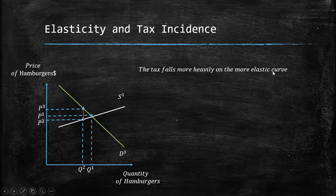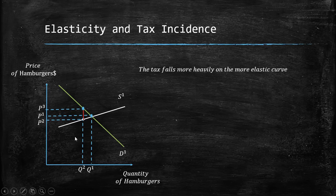The more inelastic you are, the more you are going to be affected by the tax. If you are more elastic, like the supply curve in this example, you will be less affected. As shown in the graph, the demand is more inelastic here, so it is affected more. If you are elastic, you are not going to be so affected.